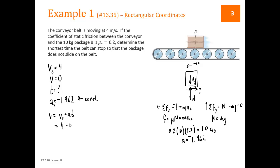And plugging things in, we get 4 minus 1.962. Our final velocity is 0. Solve for t. t is going to be 2.04 seconds.